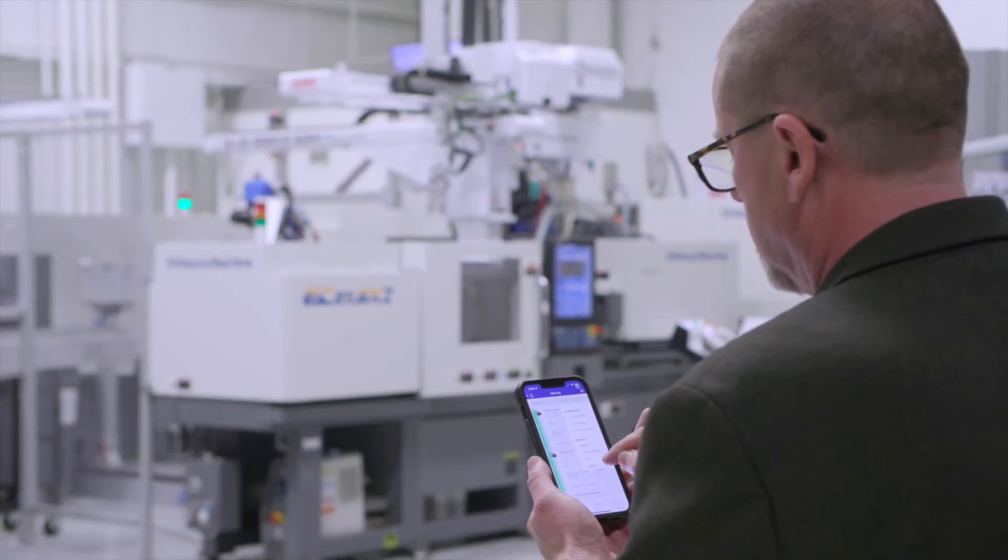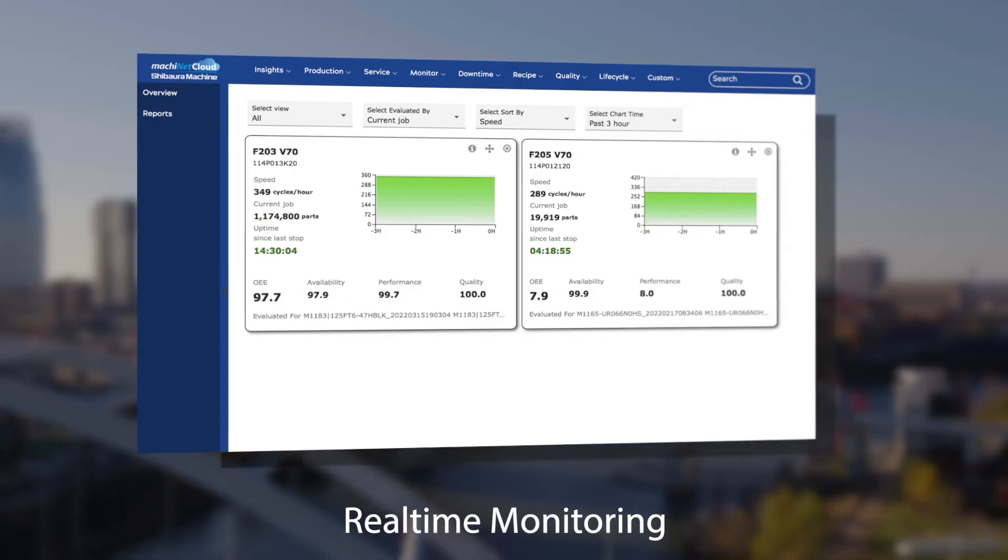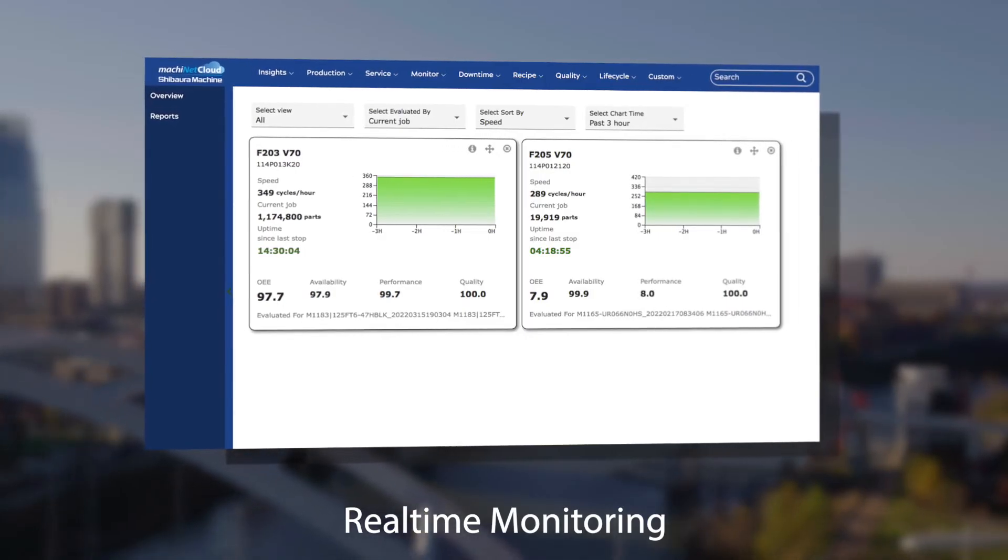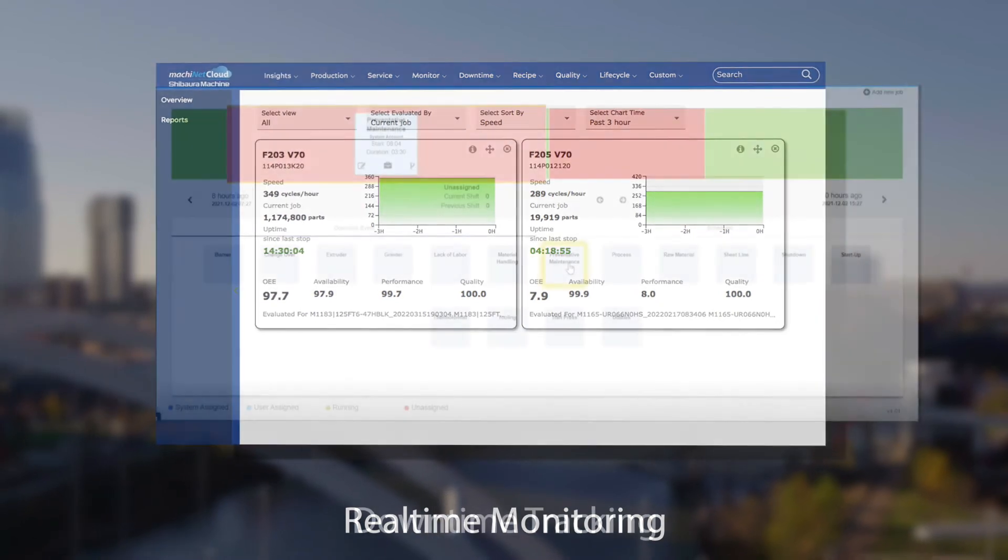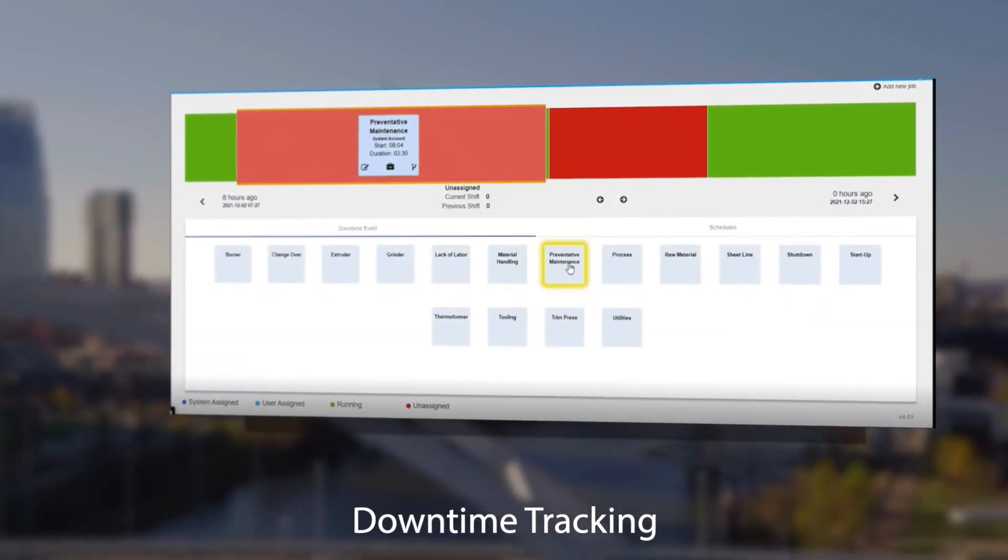Insights, monitoring, and analytics are tracked for this machine and the entire cell through MachineAct Cloud. MachineAct Cloud securely allows operators to monitor production in real time and receive instant alerts for preventative maintenance and more.